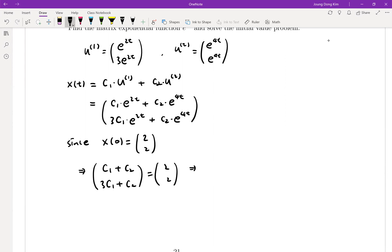Which means c1 plus c2 is 2, and 3c1 plus c2 is 2. When I subtract, it is negative 2c1 equals 0. Then simply, your c1 must equal 0. Then I can say c2 is 2.